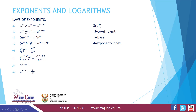For division we subtract the exponents. Third law: A times B, all raised to M, equals A raised to M times B raised to M. Whatever is inside the bracket gets multiplied by the outside exponent M.